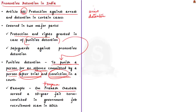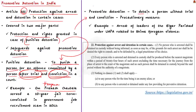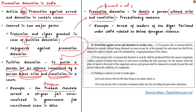The second part of Article 22 relates to safeguards against preventive detention. Preventive detention means detaining a person without trial and conviction — not to punish for a past offense, but to prevent the person from committing an offense in the future. It is a precautionary measure used by the government. An example is the arrest of Elgar Parishad leaders under the Unlawful Activities Prevention Act (UAPA) 1967 related to the Bhima Koregaon violence.